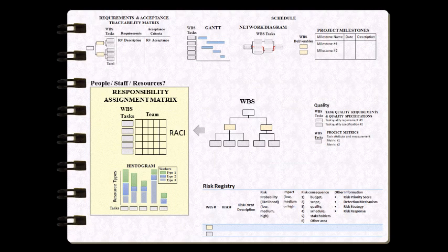Having defined the schedule, quality, and risk elements, we can now assign people to tasks. There are usually two ways to approach this section. First, develop a responsibility assignment matrix such as a RACI — you take the WBS tasks and activities and assign them to individual team members who have decision-making authority, actually action the tasks, or need to be consulted or informed. Second, consider developing a histogram, where you assign workers to individual tasks so you know how many people will be required for any particular task.